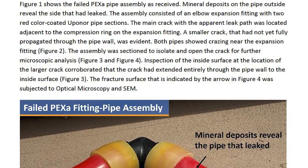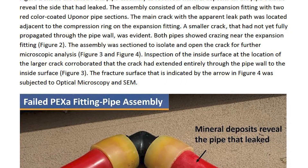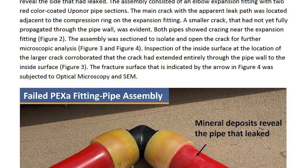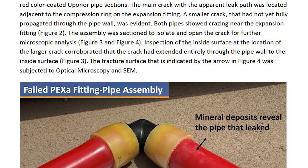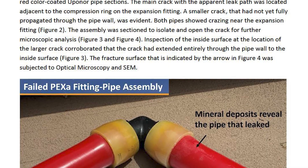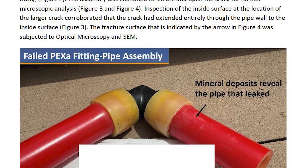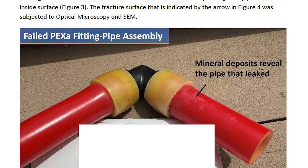Both pipes showed crazing near the expansion fitting (Figure 2). The assembly was sectioned to isolate and open the crack for further microscopic analysis (Figures 3 and 4). Inspection of the inside surface at the location of the larger crack corroborated that the crack had extended entirely through the pipe wall to the inside surface (Figure 3). The fracture surface indicated by the arrow in Figure 4 was subjected to optical microscopy and SEM.